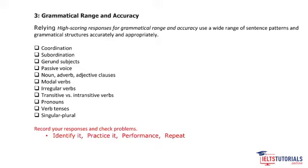Work on irregular verbs, transitive verbs, tenses, pronouns, and subject-verb agreement. Accuracy means using all of these correctly. A common mistake: students use complex sentences but forget proper punctuation — for example, incorrectly placing a comma after 'although.' Using structure is good, but appropriate and accurate usage is essential.